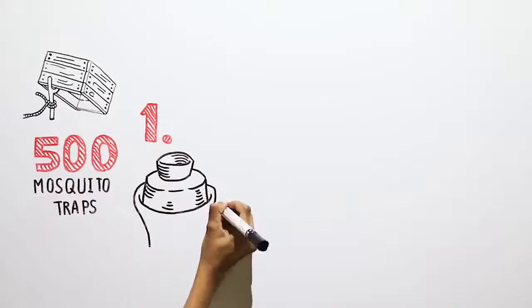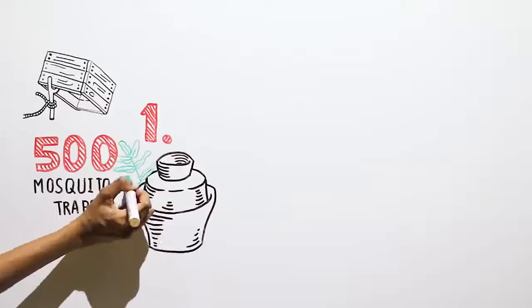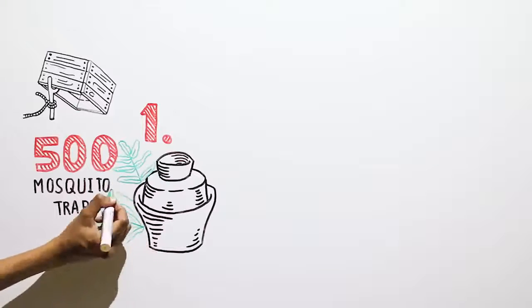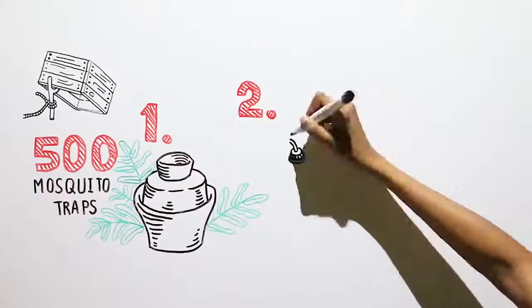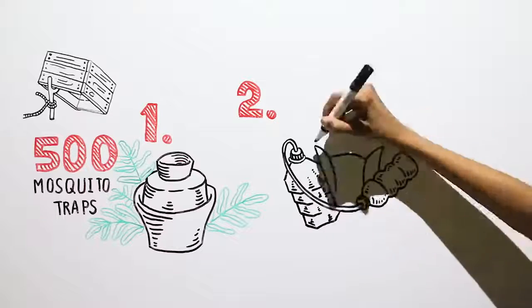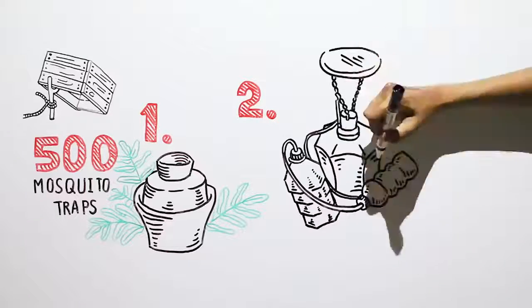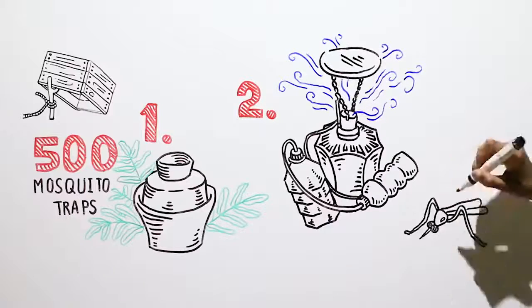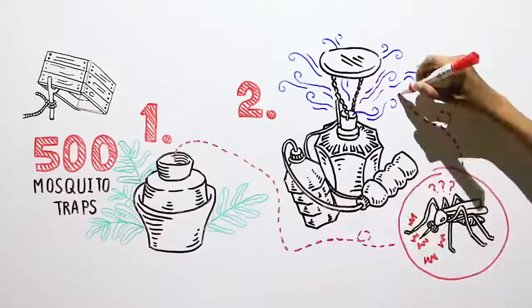One type of trap targets Asian tiger mosquitoes that have bitten someone and are searching for a place to lay eggs. A second trap attracts mosquitoes searching for blood by using a combination of carbon dioxide and lactic acid to make an irresistible aroma mosquitoes mistake for a human.